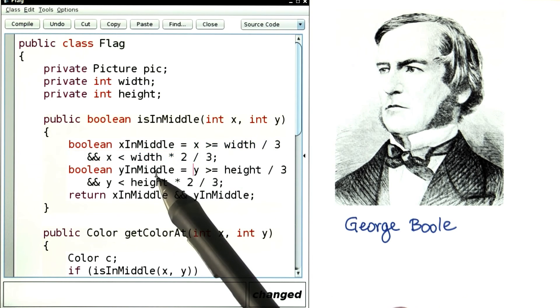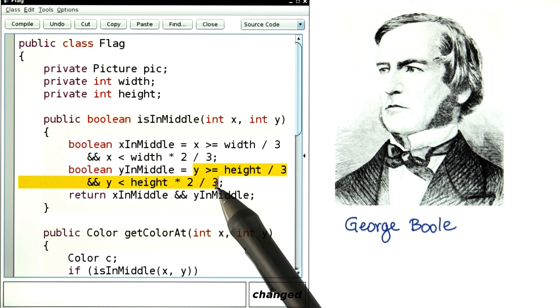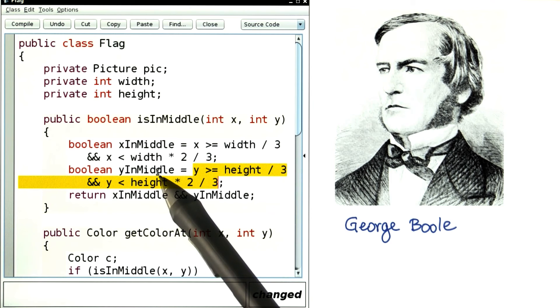And similarly, this variable over here, yInMiddle, is set to true when this condition is fulfilled and to false if it's not.